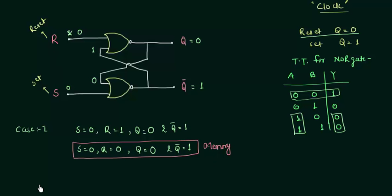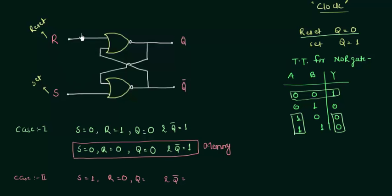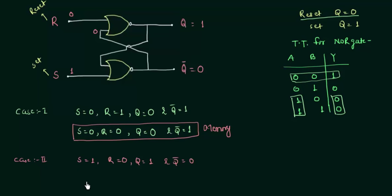Case 2: S=1, R=0. Since S is 1, any NOR gate with S as input gives output 0, so Q complement equals 0. This 0 feeds into the second NOR gate along with R=0, giving inputs 0,0, so Q equals 1. So when set input S=1, output Q=1 and Q complement=0. This confirms what was explained earlier. Again removing the inputs by setting S=0, R=0 should demonstrate memory.